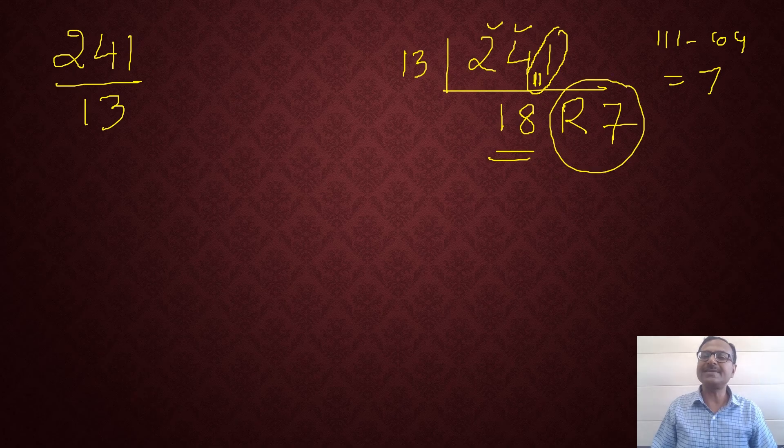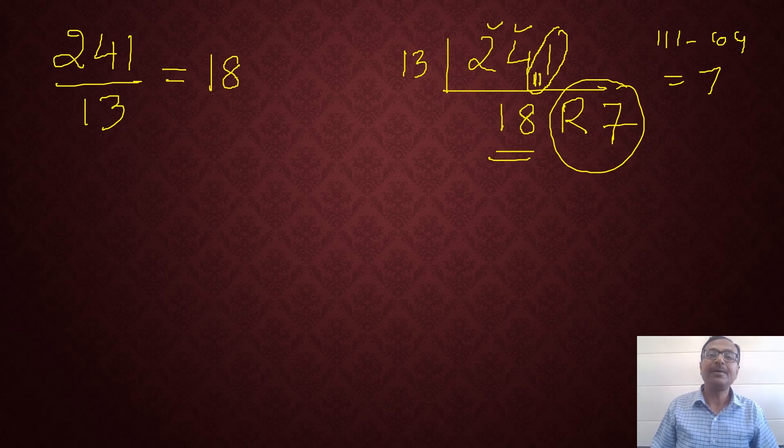So 18 is the quotient and 7 is the remainder. So I will represent 241 by 13 as 18, that is the quotient and the proper fraction part that is 7 remainder and 13 divisor. That is, 18 7 by 13 is the mixed number representation of 241 by 13. I think that is elementary and everybody should know how to convert an improper fraction to a mixed number form. Now, 18 7 upon 13, the answer obviously will be 18 point something. Because 18 was the whole number part.